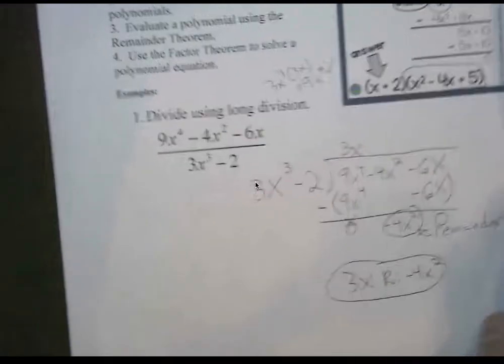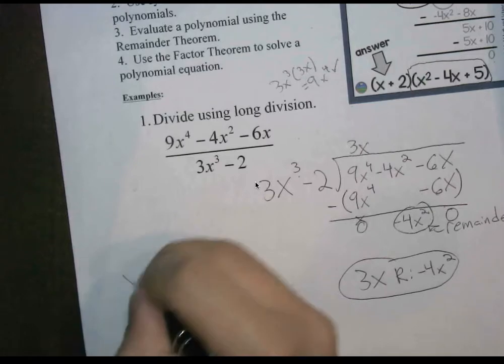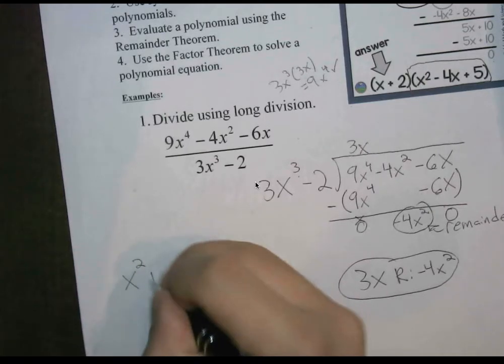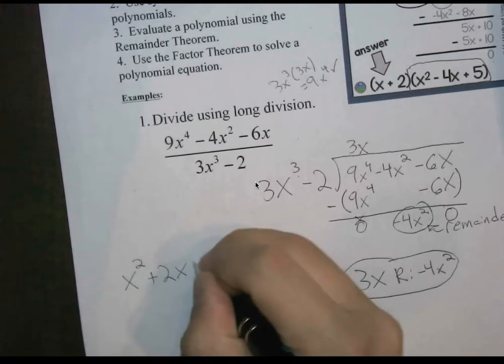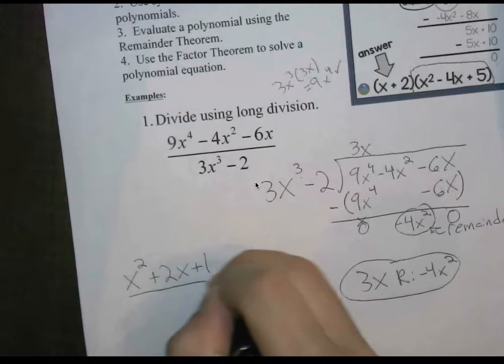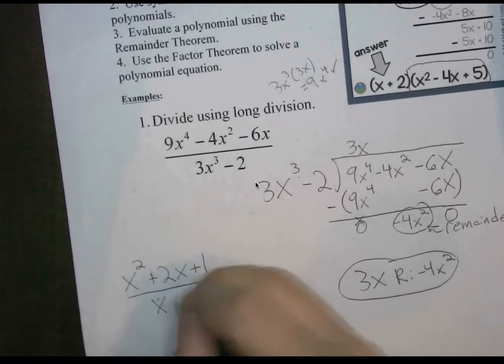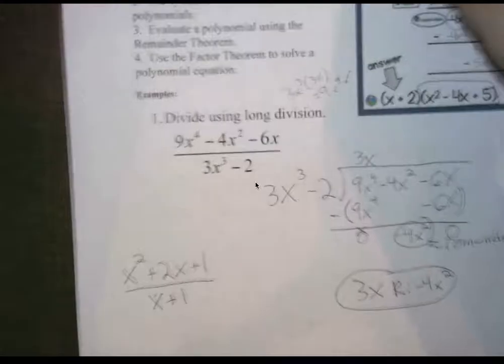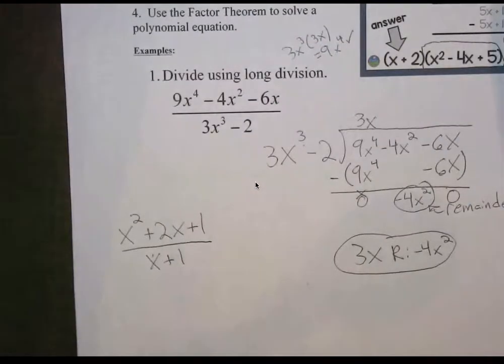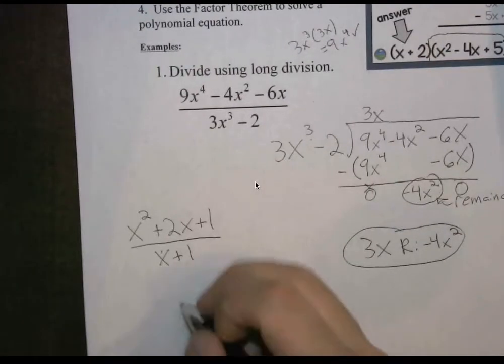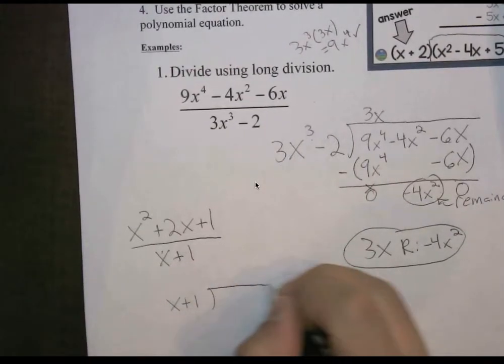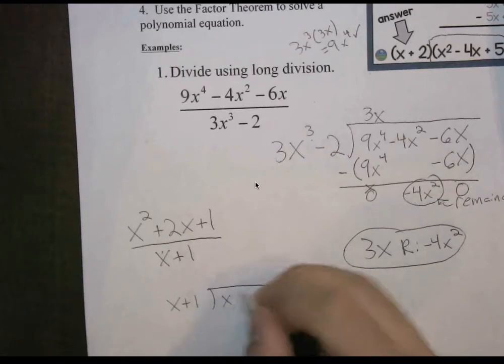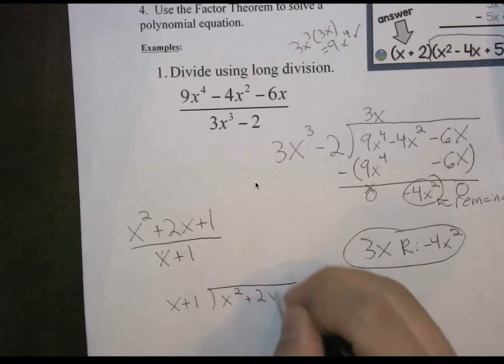I'll give you a moment to try this next one. You could have x plus 1 on the left. Inside, under here, you have x squared plus 2x plus 1.